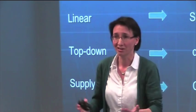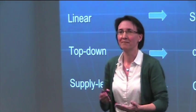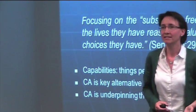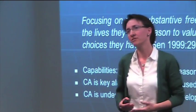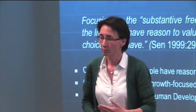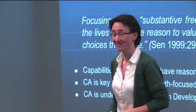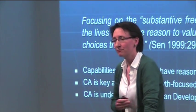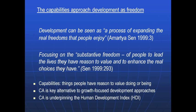All of this is explained in greater detail in the book. The capabilities approach, which Amartya Sen presented and which earned him the Nobel Prize for Economics, was to see development in pluralistic terms — talking about development as a process of expanding the real freedoms that people enjoy, particularly focusing on the substantive freedom of people to lead the lives that they themselves have reason to value, and to enhance the real choices that they have.